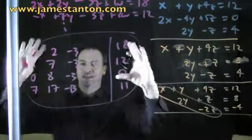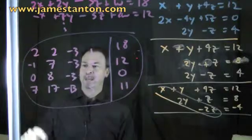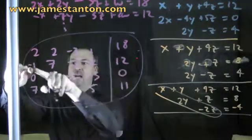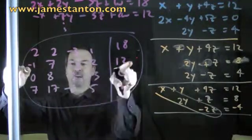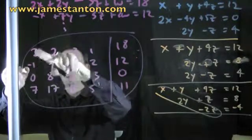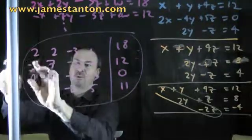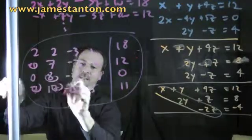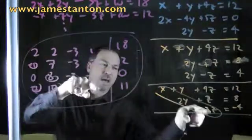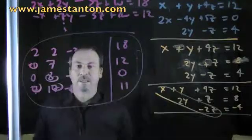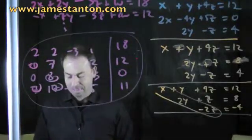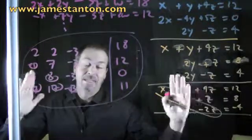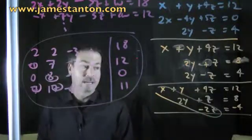Matrix means the background stuff that holds things in place. So I could just do the same work here. For example, this second equation — I could double it, get negative 2 here and the rest, and then add the first equation to it. That would give me a 0 there. I'm going to try to get all these entries as being zeros. Gaussian elimination is actually very natural and very easy, and high school students — even younger students — can actually handle this with ease. It feels like little logic puzzles.